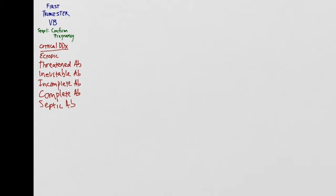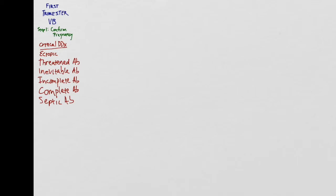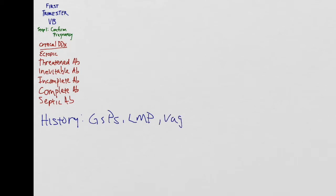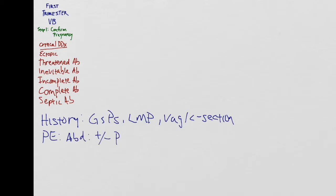Now that we have our critical differential diagnosis, we can go see the patient and be much more focused with our history and physical exam. In your history, it's important to ask the patient about their G's and P's, when their last menstrual period was, and in any prior pregnancies that went to term, whether it was a vaginal delivery, a C-section, or if there were any other complications. When you present this case to your attending, you want to start your first line of presentation with that information.